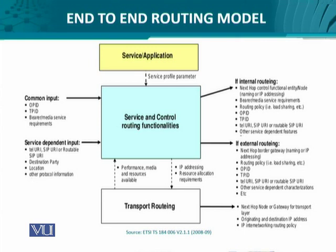After determining if routing is internal or external, the IP address resolution takes place and eventually the transport layer is invoked. The transport layer invocation results in the choice of the next hop node or gateway and the IP internetworking policy is enforced. Finally, after the routing is done, at the individual router or intermediate device level, packet forwarding takes place.